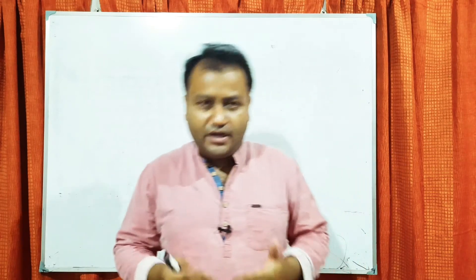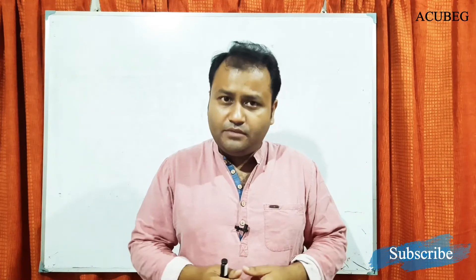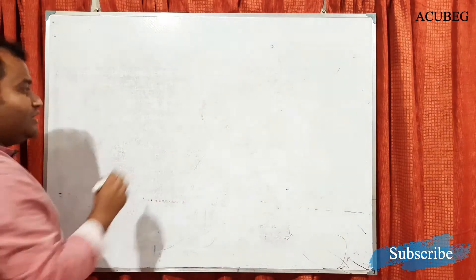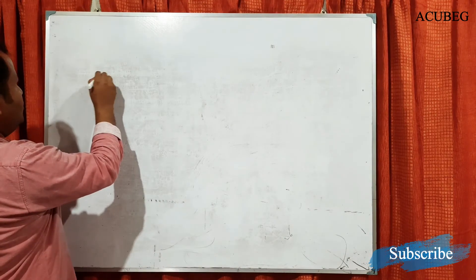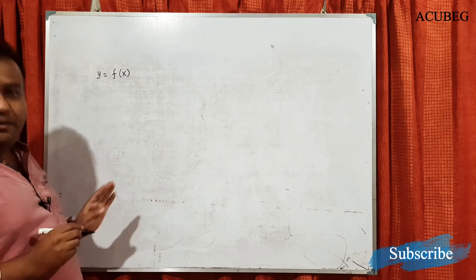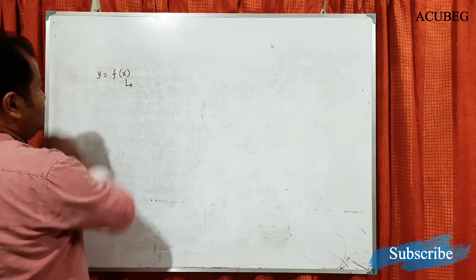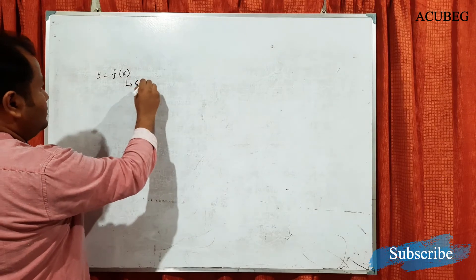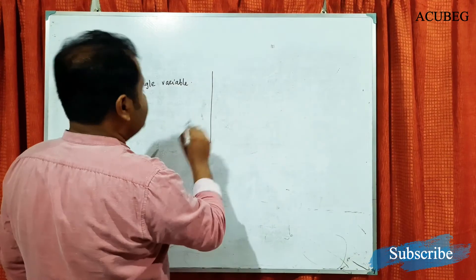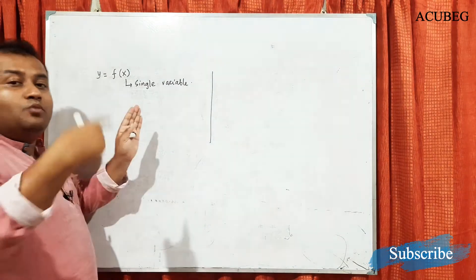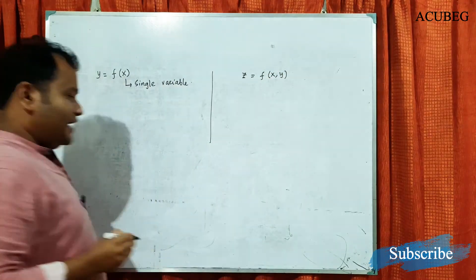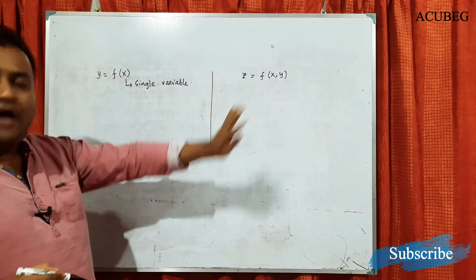Normally in class 11 or 12 we discuss functions of a single variable. For example, y equals to f(x) — this is a function of single variable x. A function of several variables is when the number of variables is more than one. For example, z equals to f(x, y) is a function of two variables x and y.